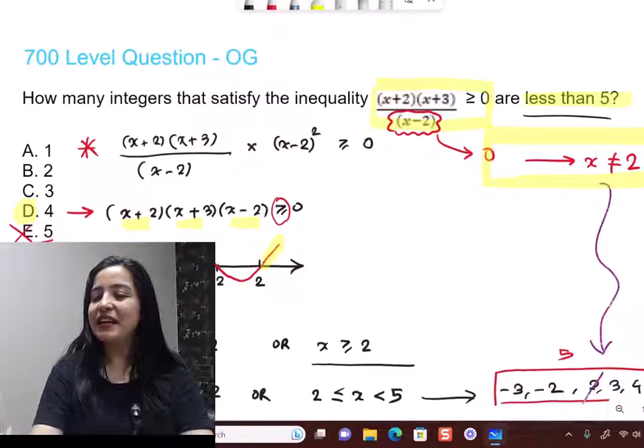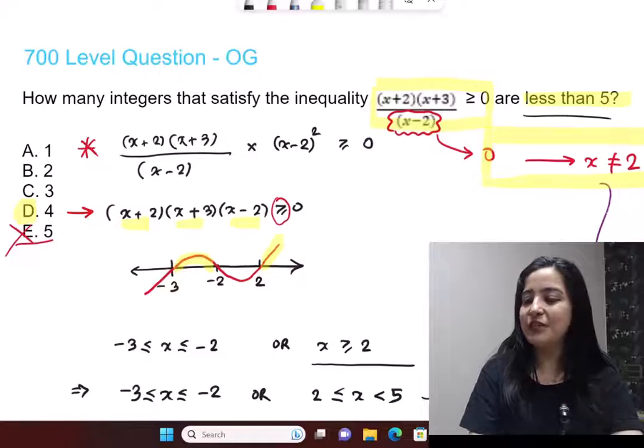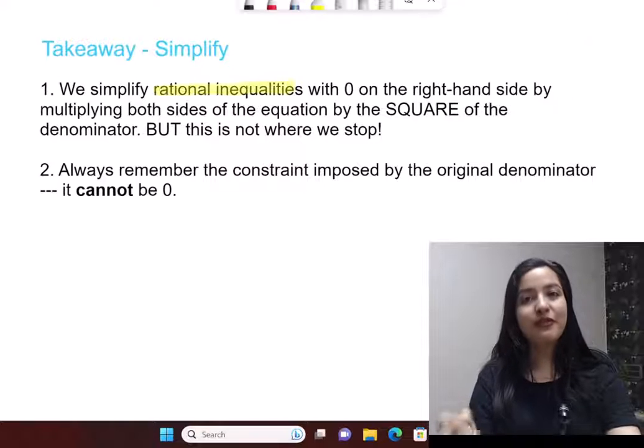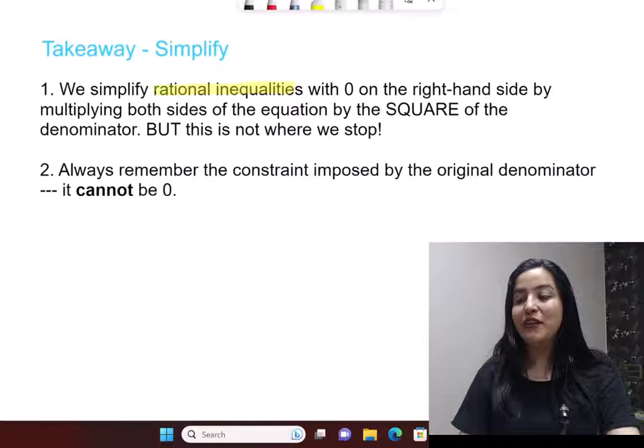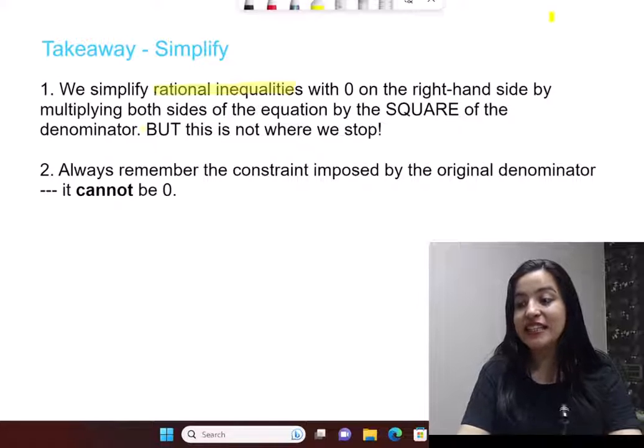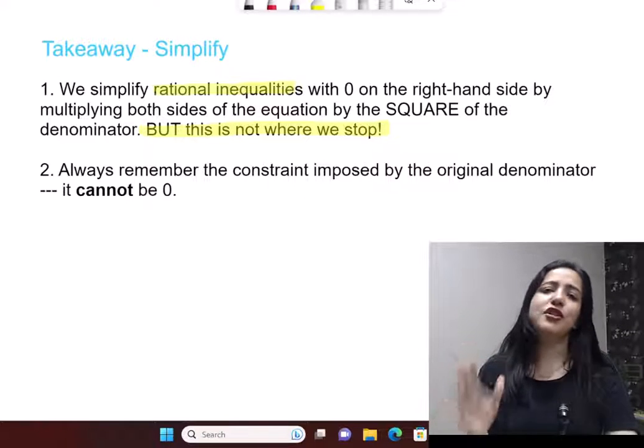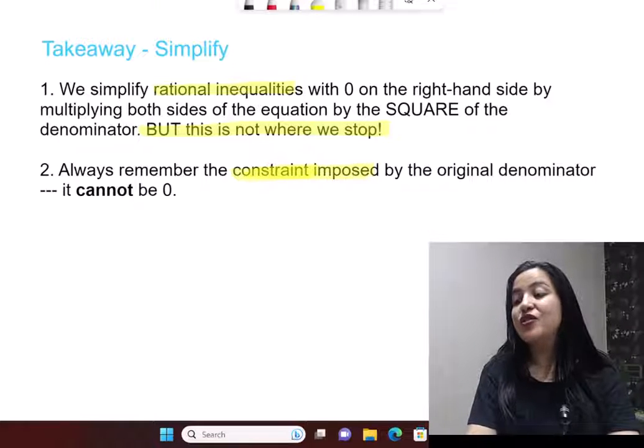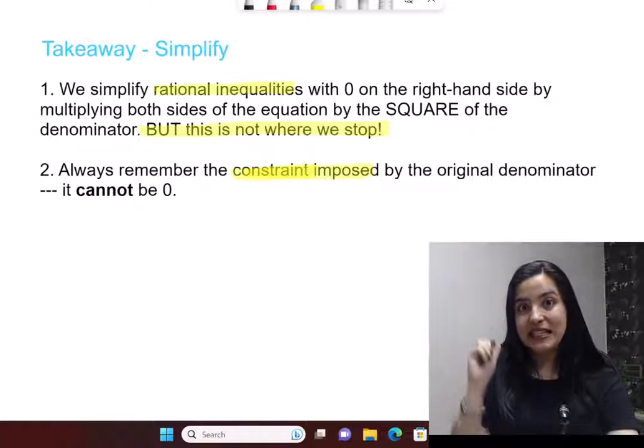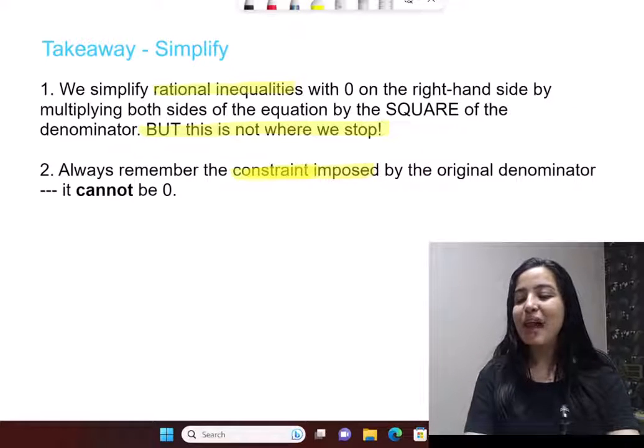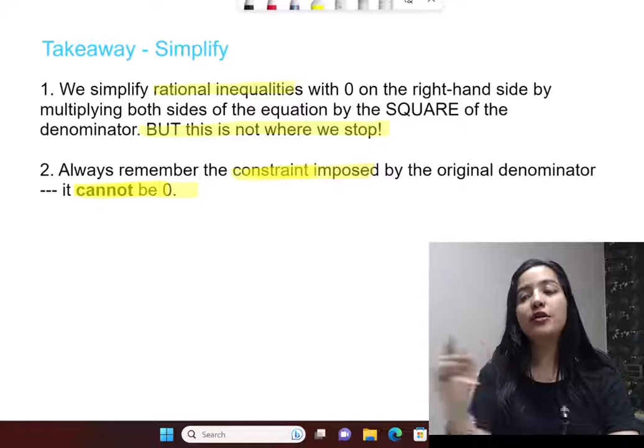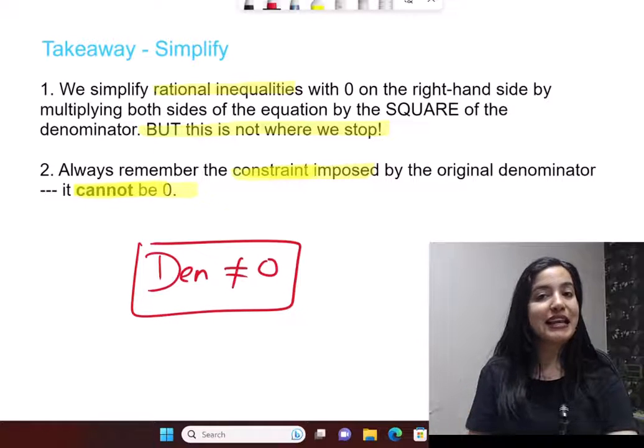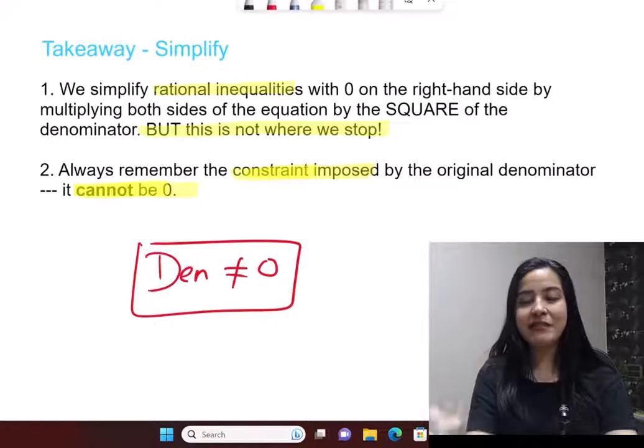Let's summarize everything that we learned here through a set of takeaways. So you know when you have rational inequalities, you simplify them by multiplying by the square of the denominator. But this is not where you stop. Don't just stop after the simplification. Make sure that you write down the constraint that is imposed by this denominator that you just so easily multiplied by, this denominator not being zero. So there always will be a constraint coming by this little factor. So keep all of these things in mind.